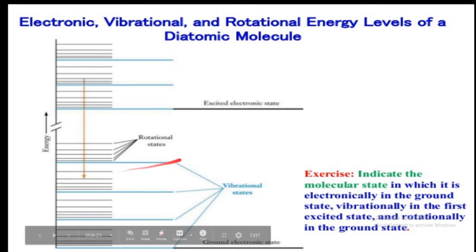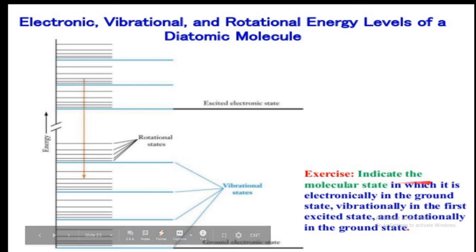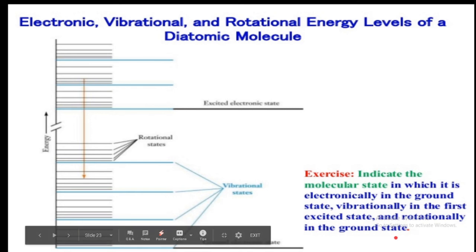This is the quantum number notation indicating the molecular state. For example, a molecule that is electronically in the ground state, vibrationally in the first excited state, and rotationally in the ground state can be indicated using the corresponding quantum number values.